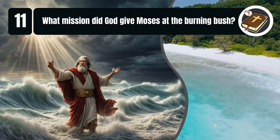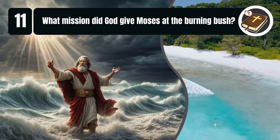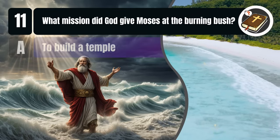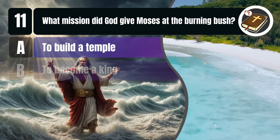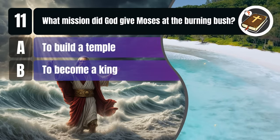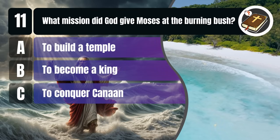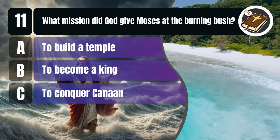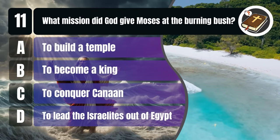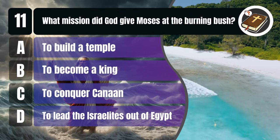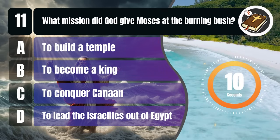Question 11. What mission did God give Moses at the burning bush? A. To build a temple, B. To become a king, C. To conquer Canaan, D. To lead the Israelites out of Egypt. You get 10 seconds.